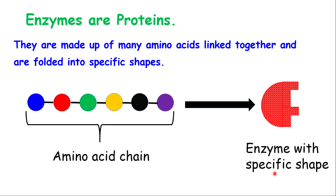The first property is that enzymes are proteins. This means that they are made up of many amino acids linked together and are folded into specific shapes. Since they are proteins, they will have specific shapes because proteins are folded to form various shapes. So within an enzyme, you will see long chains of amino acids, and because of this long chain of amino acids, they form into a specific shape.